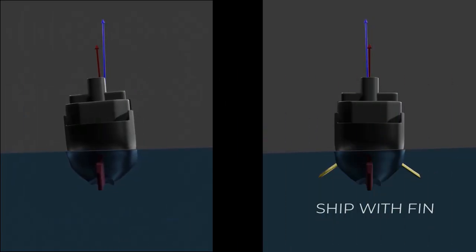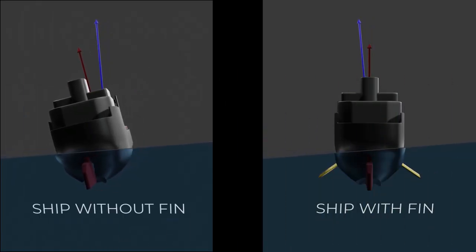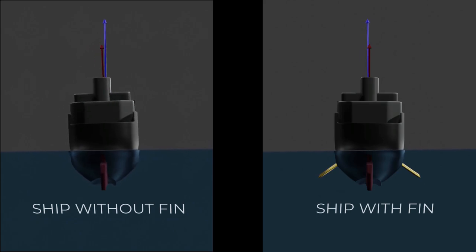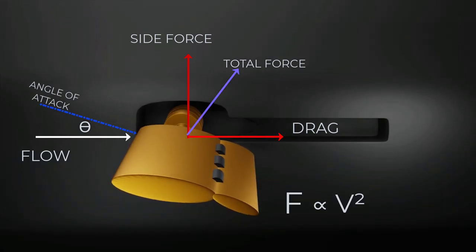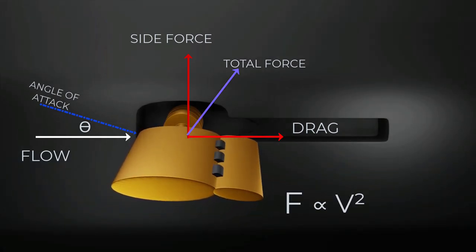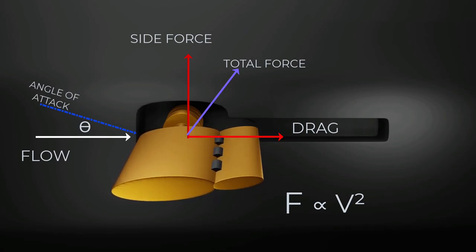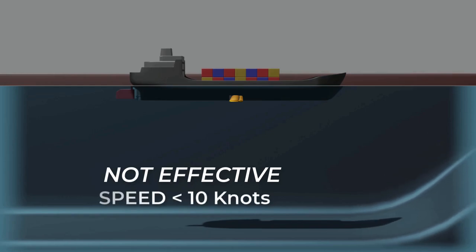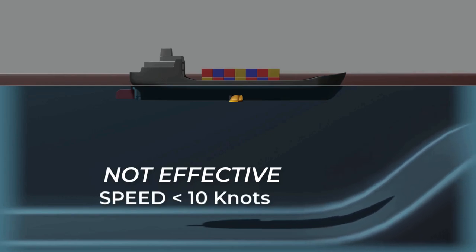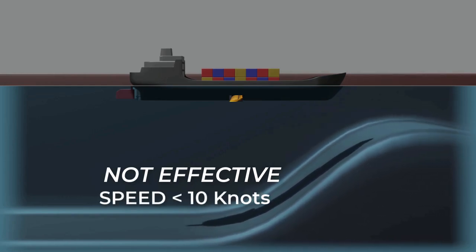By using active fins, there can be a huge reduction in rolling compared to ships with no active fins, whose rolling angle will be large. The force on a fin varies in proportion to the square of the ship's speed, whereas the GZ curve of the ship is independent of speed. However, a fin system is not likely to be very effective at speeds below about 10 knots.